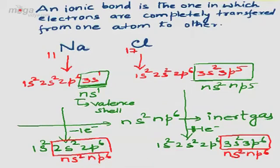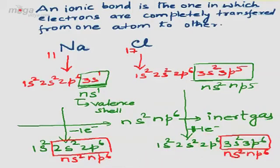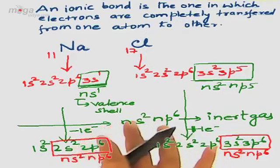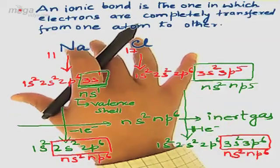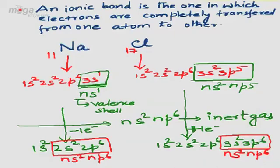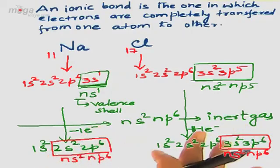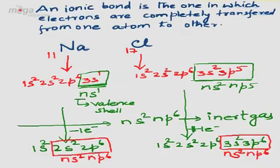The key observation is that during the bonding between Na and Cl, there is complete transfer of an electron from sodium to chlorine. As already defined, during ionic bonding, electrons are completely transferred from one atom to the other. Sodium undergoes loss of 1 electron to attain NS², NP⁶ configuration, while chlorine undergoes gain of 1 electron to attain NS², NP⁶ configuration. This is what happens in ionic bonding — electrons are completely transferred from one atom to the other.